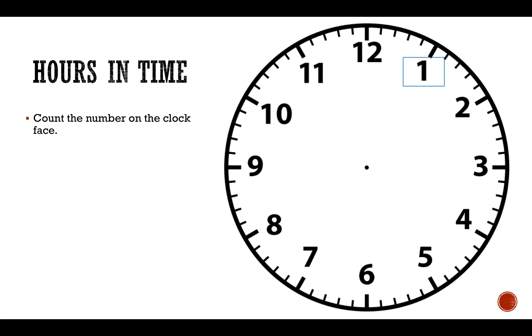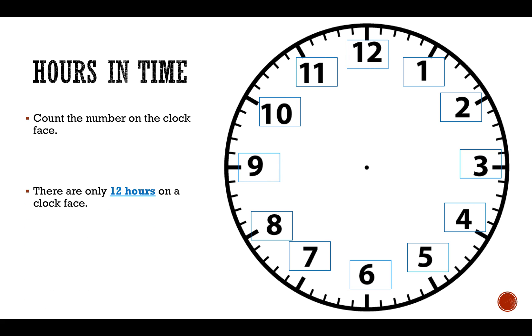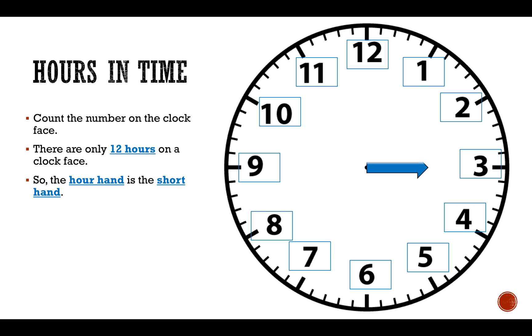1, 2, 3, 4, 5, 6, 7, 8, 9, 10, 11, 12. There are only 12 hours on a clock face. So the hour hand is the short hand. Although there are only 12 hours showing on a clock face, there are 24 hours in one day.